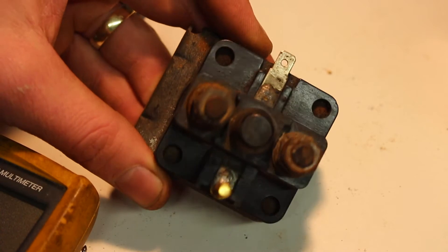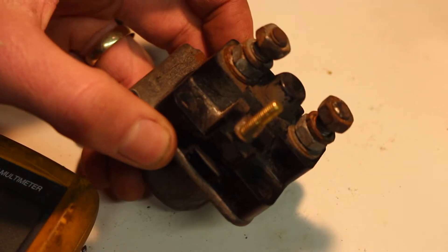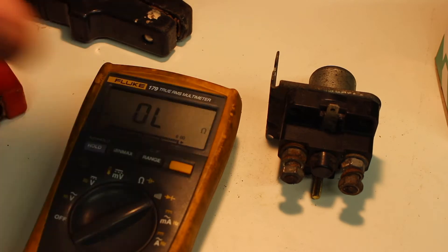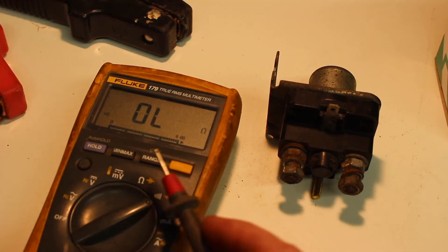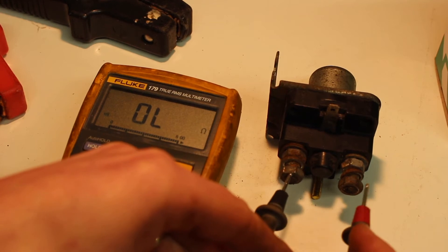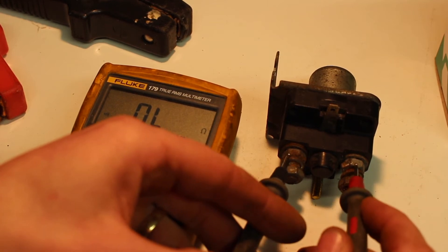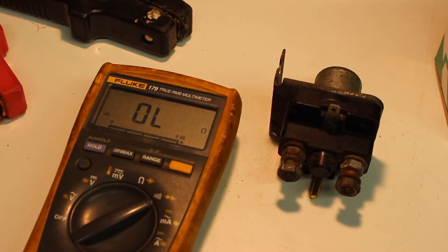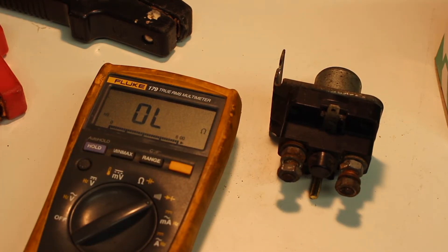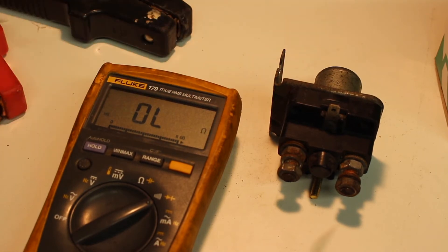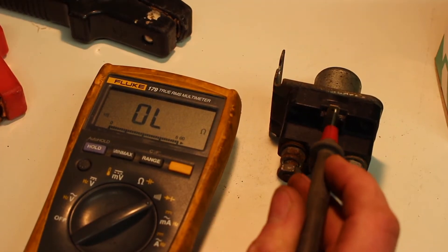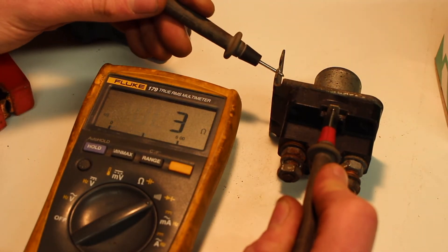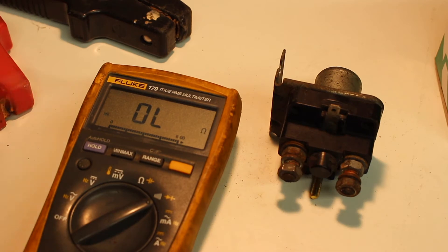First thing we're going to check is that the solenoid isn't stuck open. So we're going to put our meter onto ohms or resistance range and test between the two main terminals. Nothing at all, that's as it should be. And then we're going to test the resistance of the solenoid coil itself. So we're going to go between the spade terminal and anywhere on the body. Here we're getting three ohms, which is a good reading.